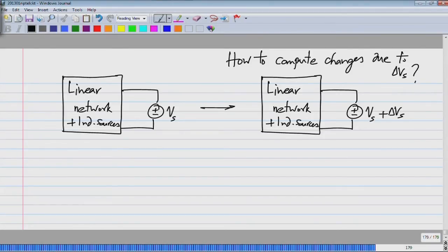How would we go about doing this? That's right, as Sumit answered, you use superposition. The way to do it is because this is a linear network. We have already calculated the solution to this, and this Vs plus delta Vs is nothing but Vs in series with delta Vs.